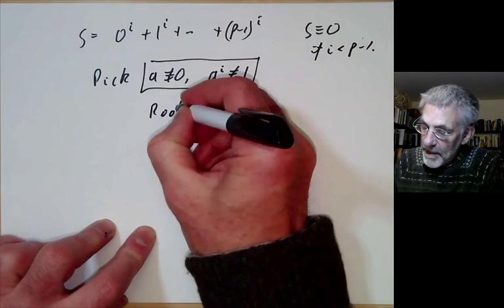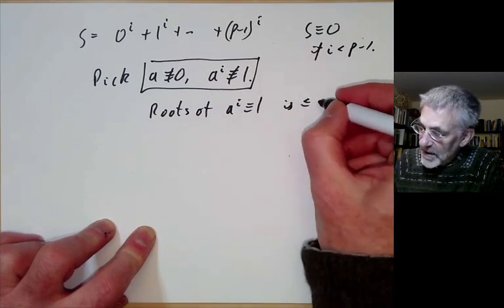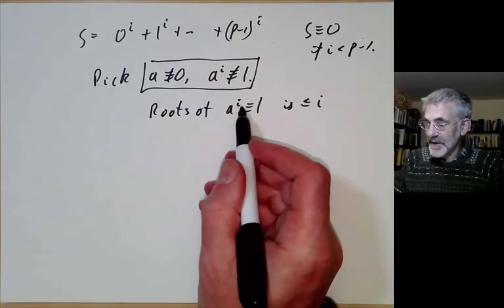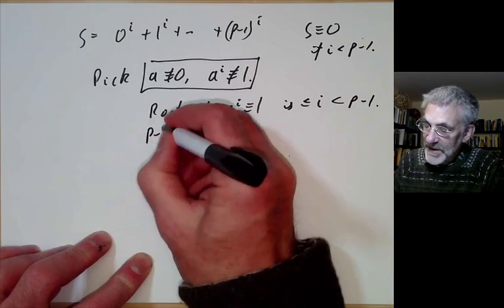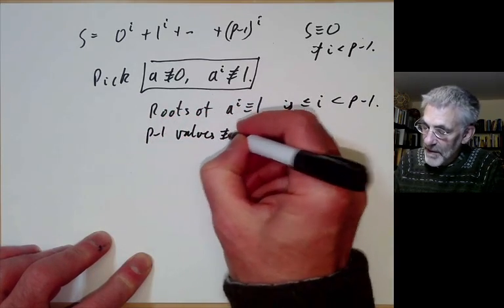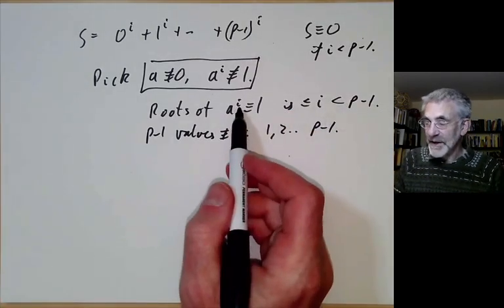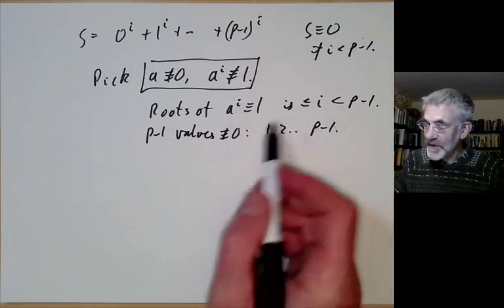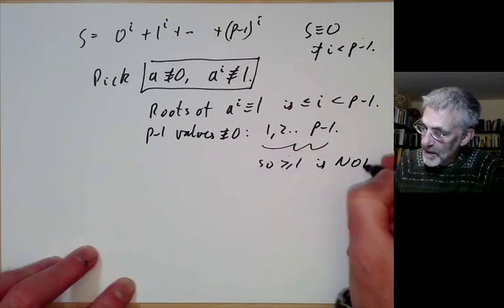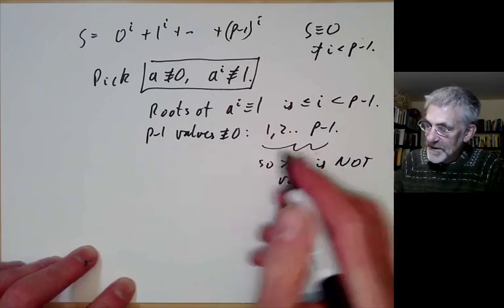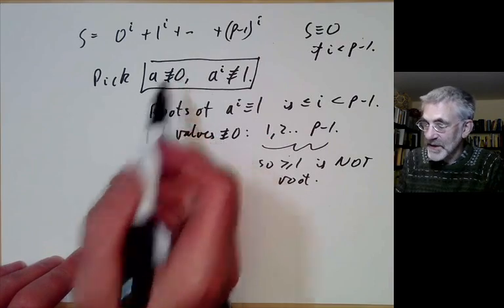Let's check we can do this. The number of roots of a^i ≡ 1 is at most i, because this is a polynomial of degree i, which is going to be less than p-1. But there are p-1 values that are non-zero, which are just 1, 2, up to p-1. So this equation has less than p-1 roots, so at least one of these p-1 numbers is not a root. So at least 1 is not a root. And this is the condition we want, that a is not a root of a^i = 1 and it's non-zero.